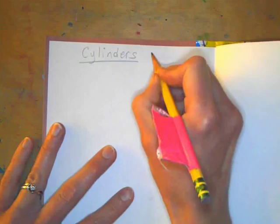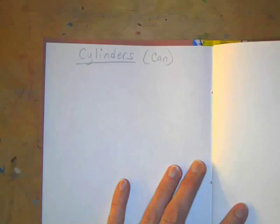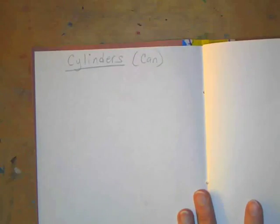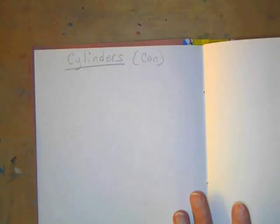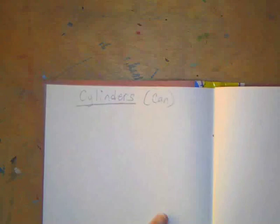A cylinder is a can, a trash can, a soda can, a bottle, a vase, a mug, a cup. Those are all cylinders. So the steps to a cylinder.